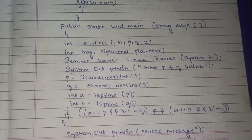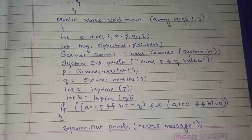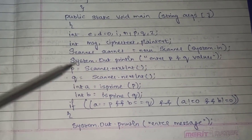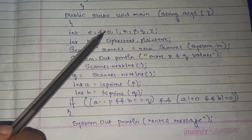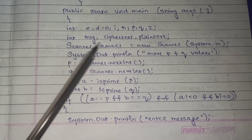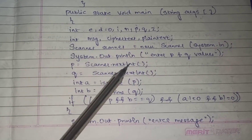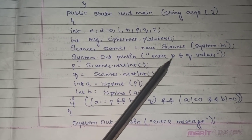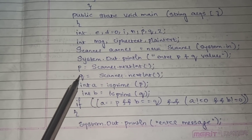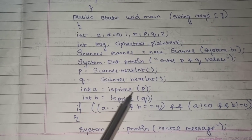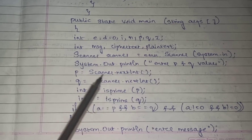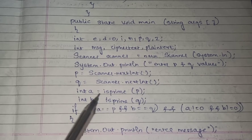Now moving to the program. In the main function — public static void main with String arguments — you declare variables p, q, z, d (initialized to 0), e, n, and i, along with variables for message, ciphertext, and plaintext. A Scanner object is used to take input from the user for p and q. Then is_prime is called, passing p and q, and the results are stored in a and b.